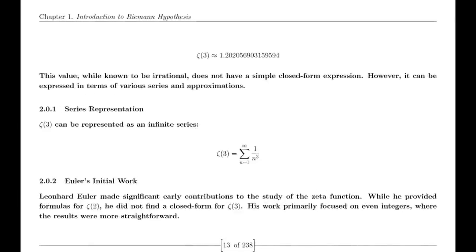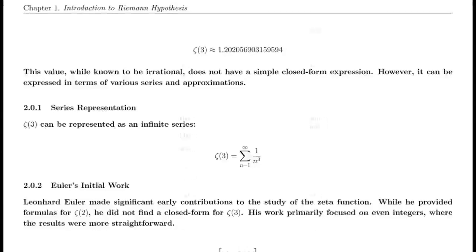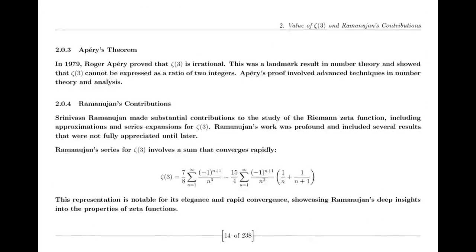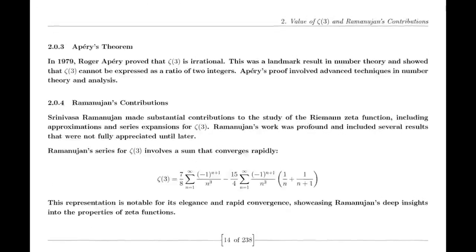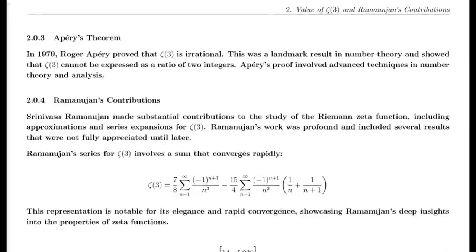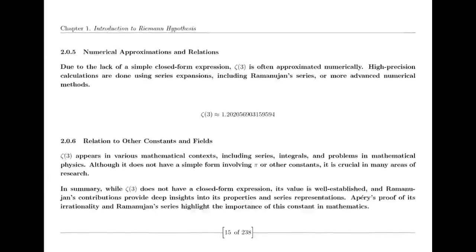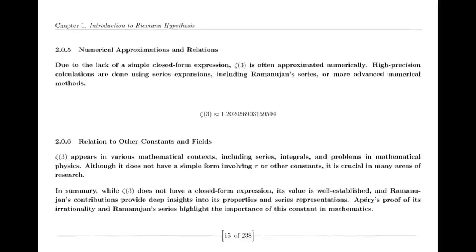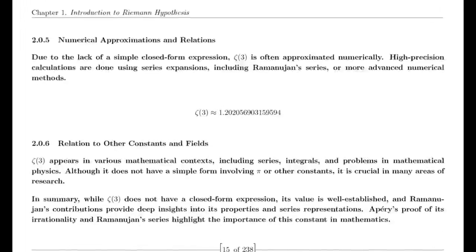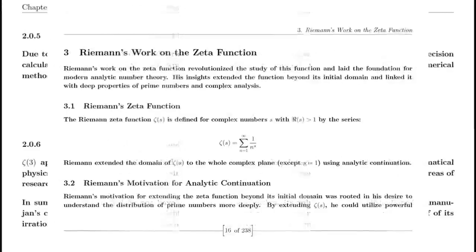In 1859, Riemann published his seminal paper on the distribution of prime numbers, which introduced the zeta function and laid the groundwork for modern analytic number theory. This paper was a milestone in mathematical history and has had a lasting impact on the field, influencing subsequent research and discoveries.